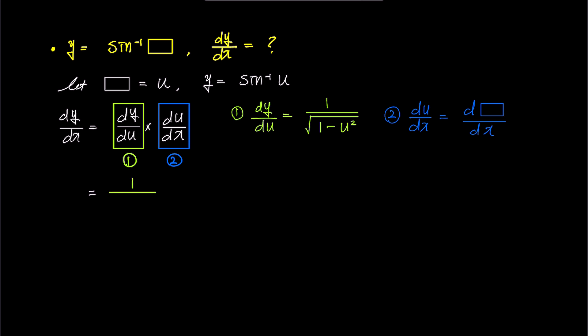If we represent d box over dx as a box prime and u as a box, it can be rewritten as 1 over square root 1 minus box squared times box prime.